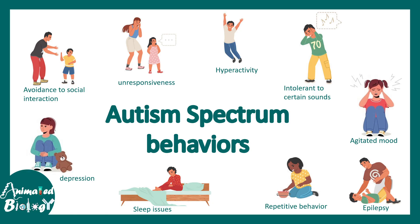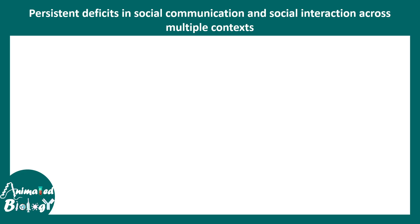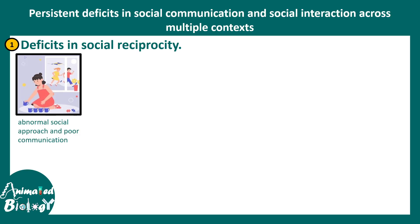Each of these phenotypes or symptoms cannot individually suggest that a child might be affected with autism. There are different criteria based on which autism spectrum disorders are defined. One such criteria is the DSM-5 manual, which talks about specific criteria for autism spectrum disorder. It states there is a persistent deficit in social communication and social interaction across multiple contexts, meaning there could be a deficit in social reciprocity — abnormal ways of communicating with the world.